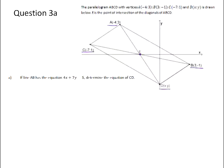Number A, if line AB has the equation 4X plus 7Y is equal to 5, determine the equation of line CD, which is this line over here. Now, the one bit of information that you need to take careful notice of here is that ABCD is a parallelogram. And that means that the opposite sides of this quadrilateral are parallel to each other.